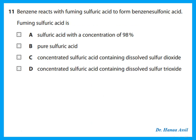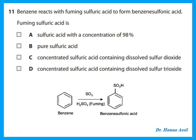Benzene reacts with fuming sulfuric acid to form benzene sulfonic acid. Fuming sulfuric acid is used when adding a sulfonic acid group (–SO₃H) to benzene. Fuming sulfuric acid is concentrated sulfuric acid that contains dissolved sulfur trioxide.